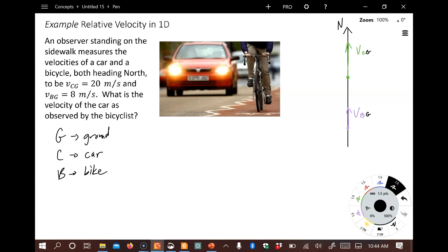And of course, just to be clear, when we write something like VCG, this means this is the velocity of the car as measured by an observer on the ground. And that's how we always read these things. Now, if we want to figure out the velocity of the car as observed by the bicyclist, we're looking for VCB, the velocity of the car as measured from the reference frame of the bicyclist. And how is that related to the other velocities that we have?